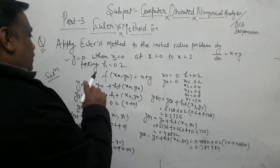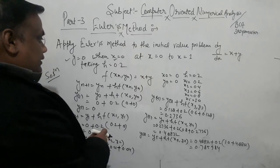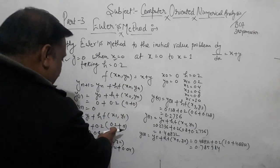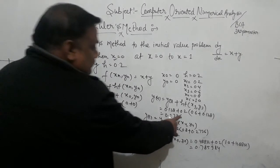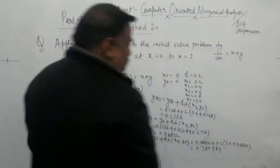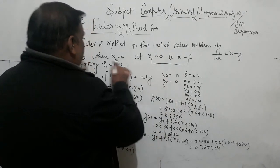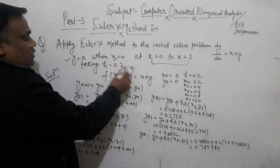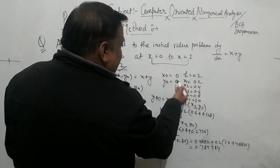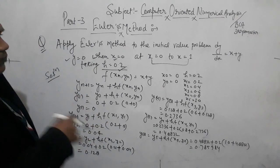So the x values were: x0 = 0, x1 = 0.2, x2 = 0.4, x3 = 0.6, x4 = 0.8, x5 = 1.0. H was 0.2. That is how we solved this. This is Euler's method — not modified Euler's method.